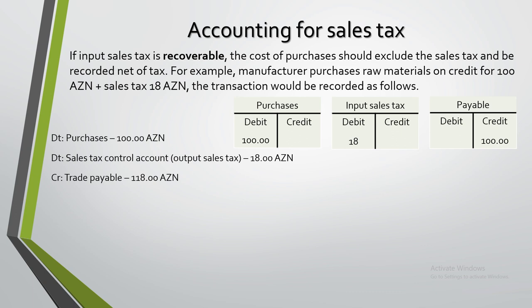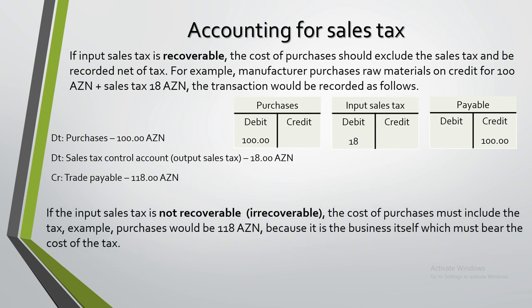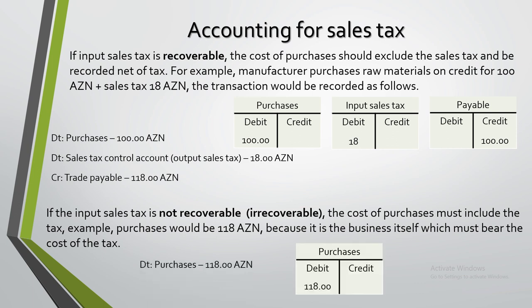If the input sales tax is not recoverable, the cost of purchase must include the tax. For example, the purchase would be 100 plus 18 ASEAN. Because it is the business itself which must bear the cost of the tax, the accounting transactions will be: debit purchase 118 ASEAN, credit trade payables 118 ASEAN.